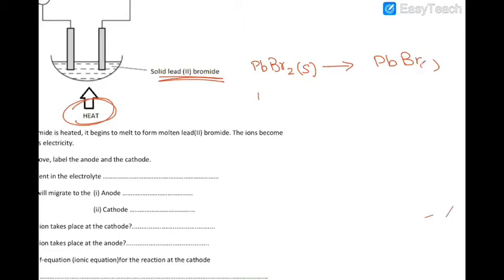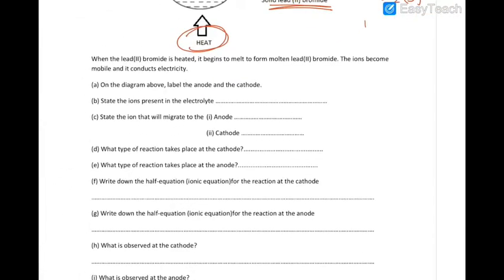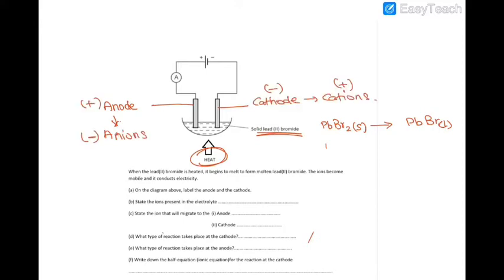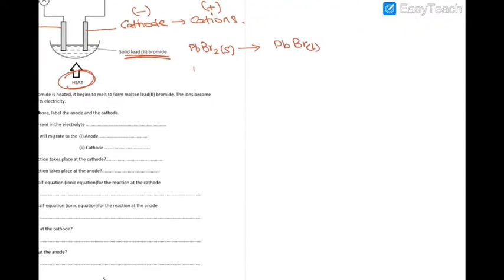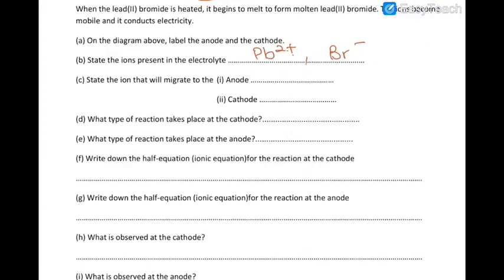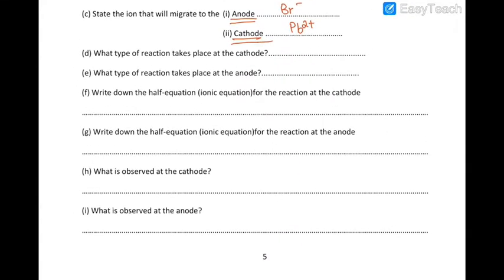But in the liquid state it starts to conduct electricity. Now label the anode and the cathode. Looking at the charges from the battery, the positive terminal connects to the anode, because it has to be positive to attract the negative anions — so the anode attracts anions. The cathode will attract cations. The ions present in the electrolyte are Pb²⁺ and Br⁻. Anions migrate to the anode; cations migrate to the cathode.